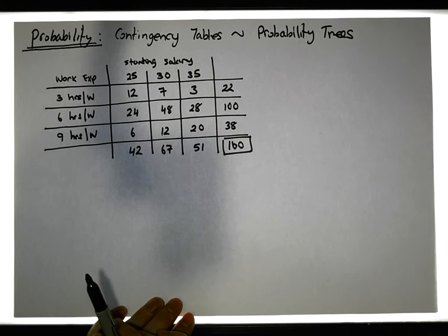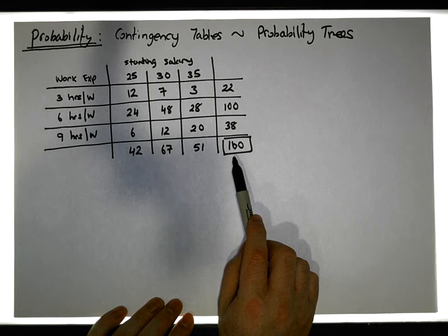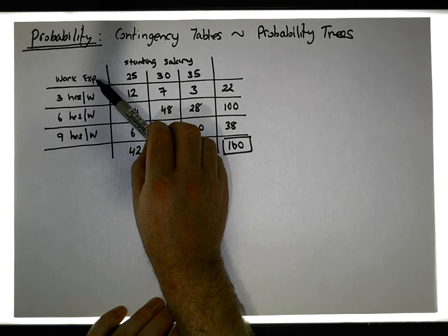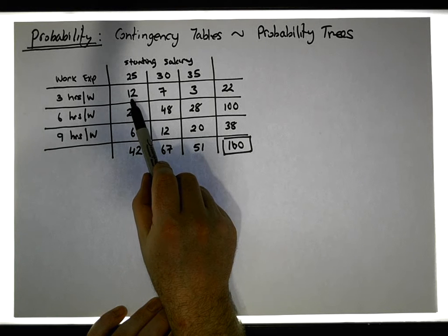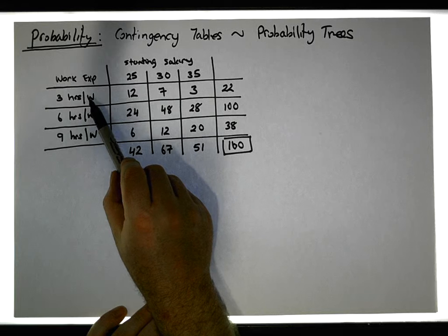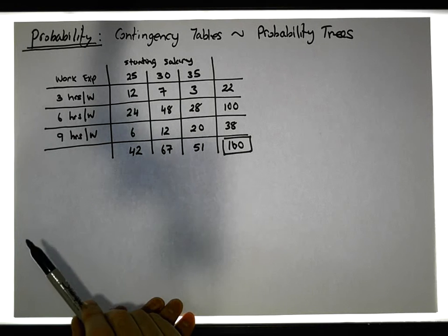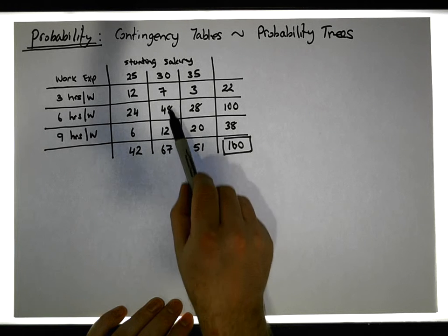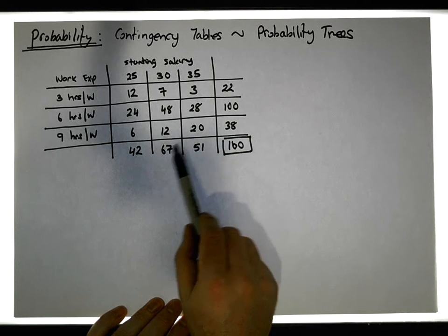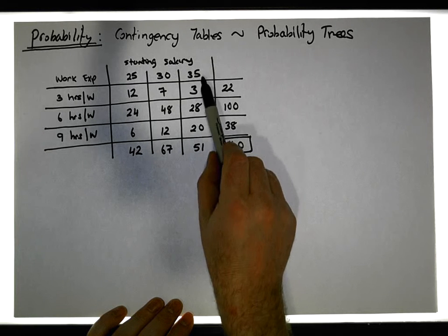There are 160 students who were asked two questions: how many hours of work experience did they undertake, and what was their starting salary. For example, 12 students said that they did approximately three hours of work experience a week and their starting salary was 25,000 euros. 48 students said they did six hours per week and their starting salary was around 40,000 euros. Another example: three students were on three hours per week with a 35,000 euro starting salary.